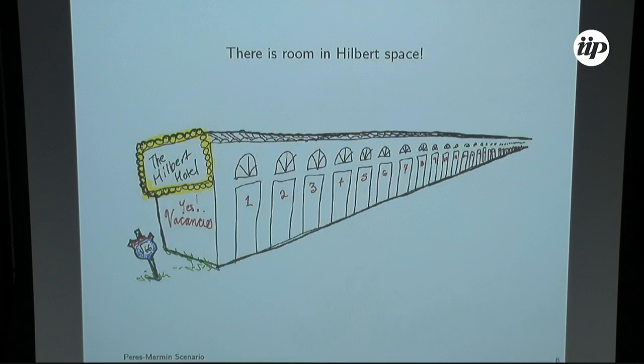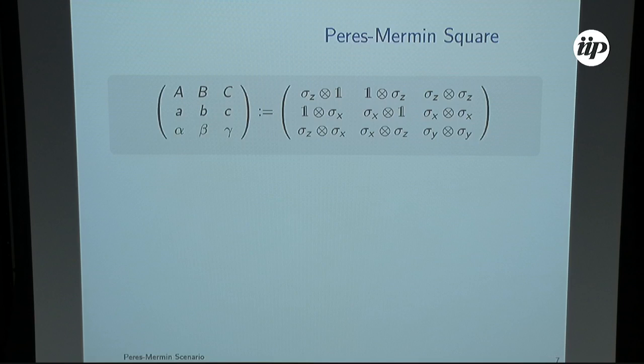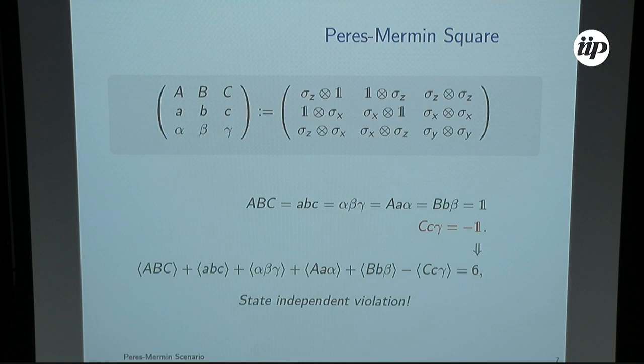But quantum mechanics is a really nice place. We can do this using the Peres-Mermin square. It has a combination of Pauli matrices on two qubits, and they have the nice property that the product of these observables is the identity, with the exception of the last column that is minus the identity. So they violate this inequality with every quantum state.